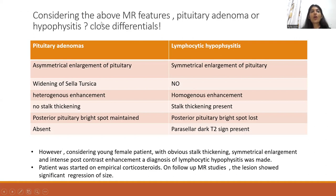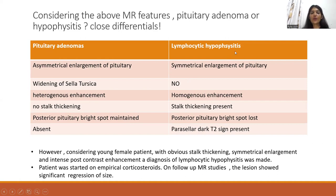Pituitary adenoma or hypophysitis — these are close mimickers. Asymmetrical enlargement of the gland points towards adenomas, while symmetrical enlargement points towards hypophysitis. Features like widening of sella turcica and heterogeneous enhancement point towards adenomas, while features like stalk thickening, posterior pituitary bright spot loss, and parasellar dark T2 sign, if present, point towards hypophysitis. In this patient — a young female with obvious stalk thickening, symmetrical enlargement, and intense post-contrast enhancement — a diagnosis of lymphocytic hypophysitis was made.